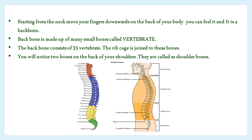Children, starting from the neck, move your fingers downwards on the back of your body. You can feel the backbone. The backbone is made up of many small bones called vertebrae, and it consists of 33 vertebrae. The rib cage is joined to these bones. If the backbone were made up of only one long bone, you would not be able to bend.